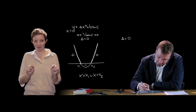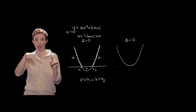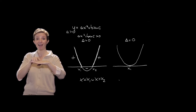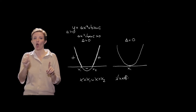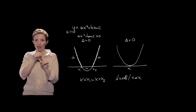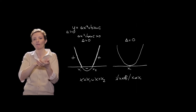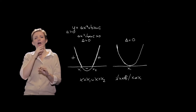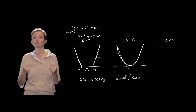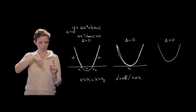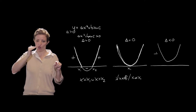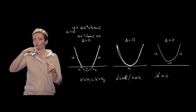Nel caso delta = 0, la parabola è tangente all'asse delle X in corrispondenza del punto di ascissa X1. La soluzione è per ogni X appartenente ai reali, tale che X ≠ X1, per il quale la parabola tocca l'asse delle X e l'ordinata è nulla. Per tutti gli altri punti, la parabola si trova al di sopra dell'asse delle X. Per delta < 0, la parabola con concavità verso l'alto si trova sempre al di sopra dell'asse delle X, quindi è sempre positiva per ogni X appartenente ai reali.